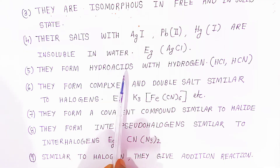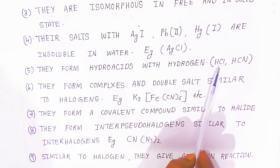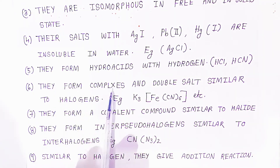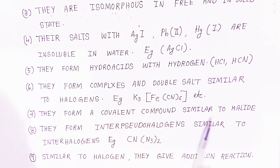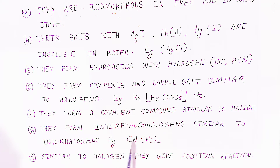They form hydro acids with hydrogen — for example, hydrogen cyanide. They form complexes and double salts similar to halogens. They form covalent compounds similar to halides. They also form inter-pseudo halogens, similar to the inter-halogens.